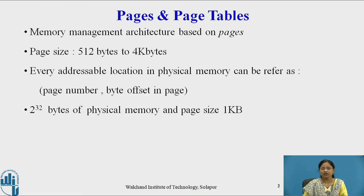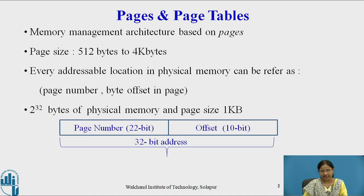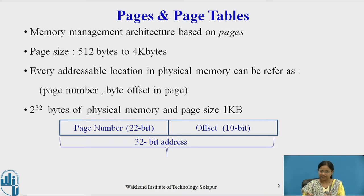Suppose we have a machine with a 32-bit address. It has 2^32 bytes of physical memory with a page size of 1 KB. Then it will contain 2^22 pages, and this 32-bit physical memory can be addressed as a 22-bit page number and 10-bit offset. So the total 32-bit memory is divided into a 10-bit byte offset and a 22-bit page number.